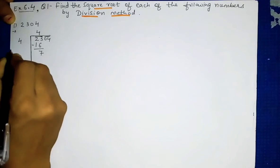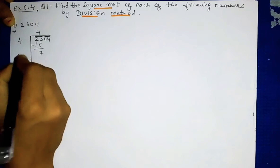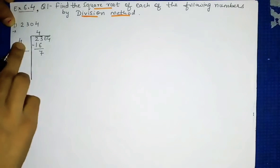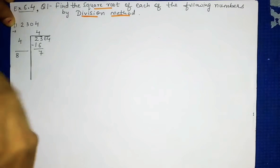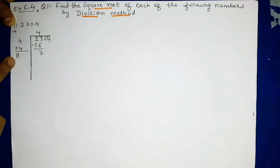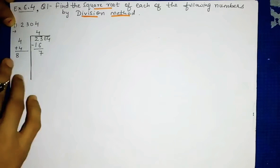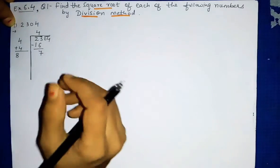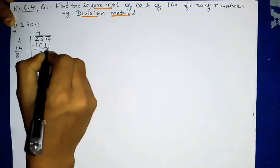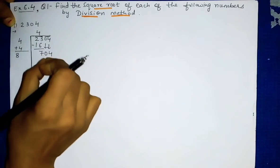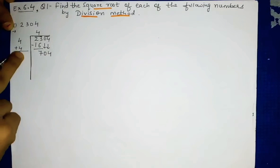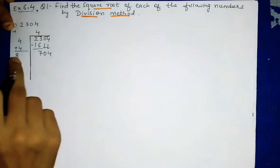The answer is 7. On the left side we take double of 4: 4 plus 4 is 8. So we write 8 here — that is the double of 4. This is our first step. Now for the second step, since '04' is in a pair, we bring both digits down together to get 704. On the divisor side we write 8, the double of 4.